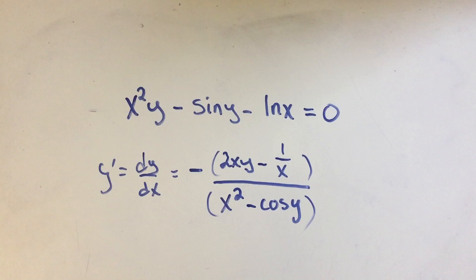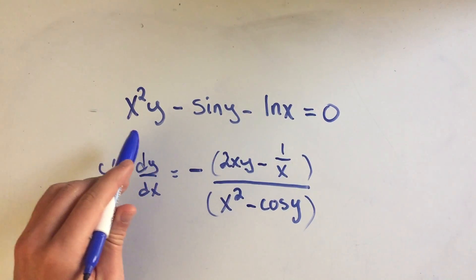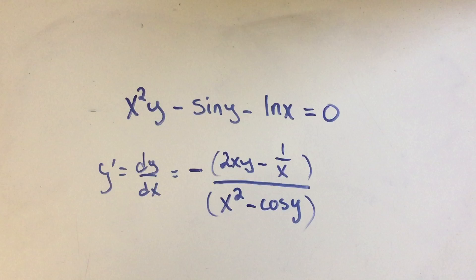So this is way, way simpler than doing the old way, where you do a product rule, and multiply by dy over dx, and then move everything to one side, and factor and divide. This will save you so much time. So this is actually taking advantage of what are called partial derivatives. You don't usually learn this until Calc 3.